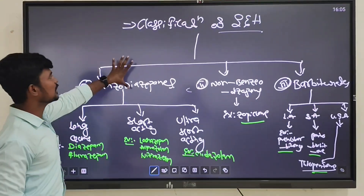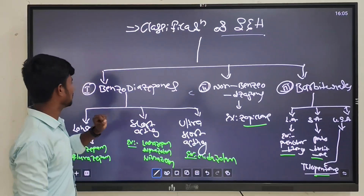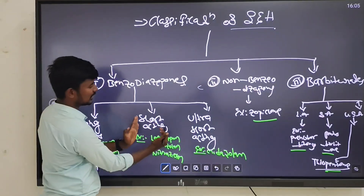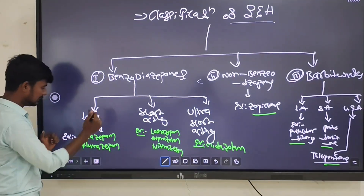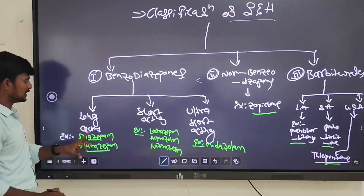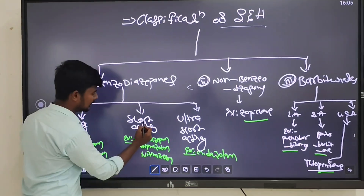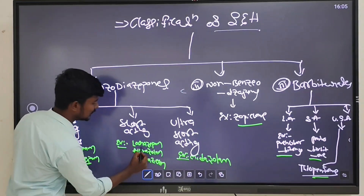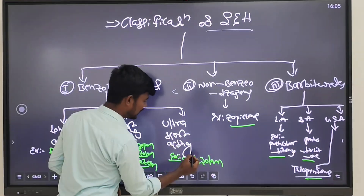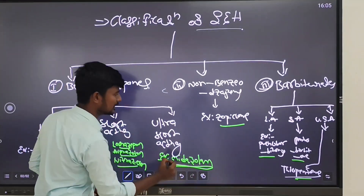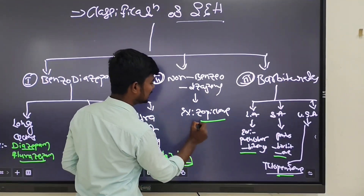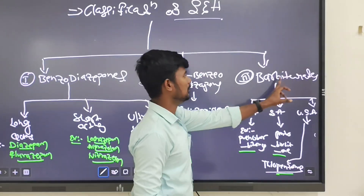This is the main classification of sedatives and hypnotics. Benzodiazepines include long-acting drugs, short-acting drugs, and ultra-short-acting drugs. The main example of long-acting is diazepam and lorazepam. In the short-acting group, the main examples are lorazepam, alprazolam, and nitrazepam. Ultra-short-acting: the main drug is triazolam. Non-benzodiazepines: the main example is zopiclone.